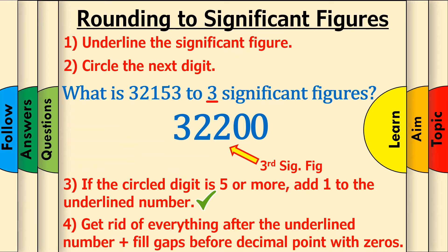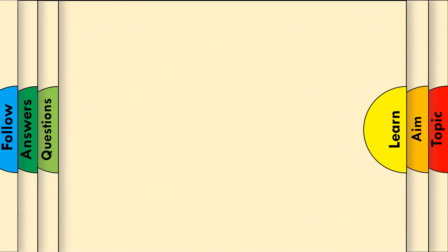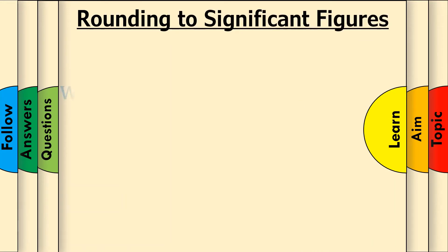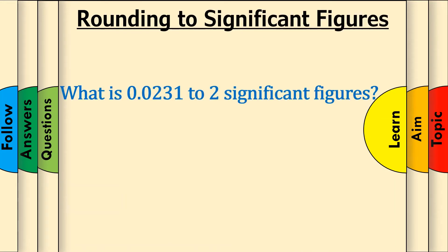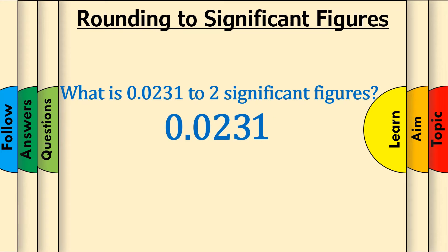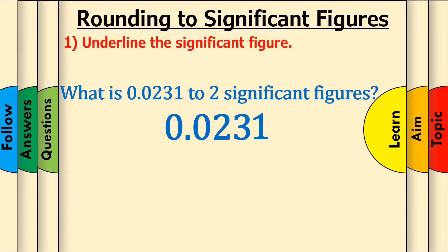Let's take a look at another example. What is 0.0231 to 2 significant figures? Since this number already has a decimal point, we can just write it down as it is. Step 1: Underline the significant figure. Here, we want to round to 2 significant figures, so underline the second significant figure, which is 3.